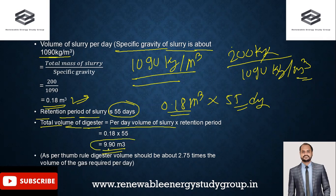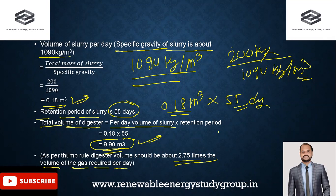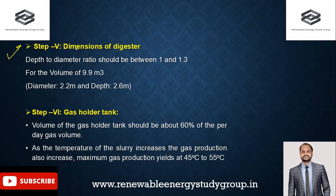As a shortcut, a thumb rule can be used: digester volume should be about 2.75 times the daily gas volume required. For 4 m³/day of gas, 4 × 2.75 = 11 m³, which is close to the calculated 9.9 m³. Either the detailed calculation or the thumb rule can be applied for biogas plant design.